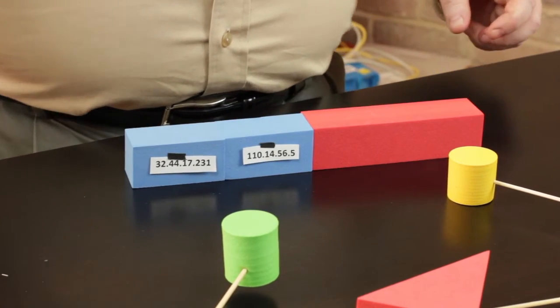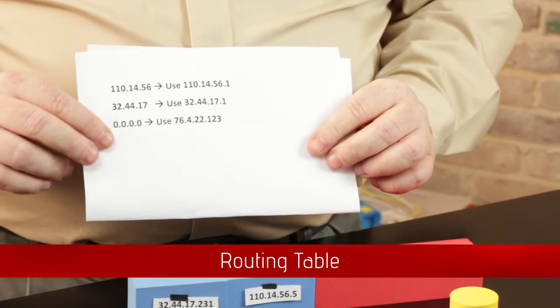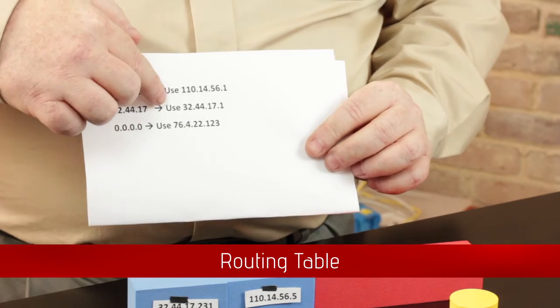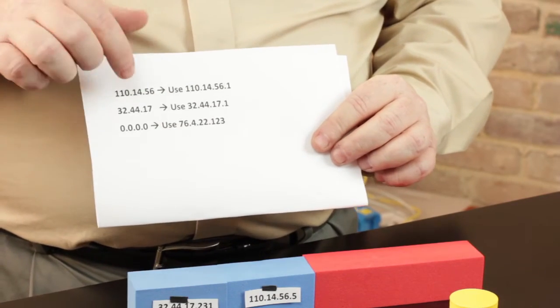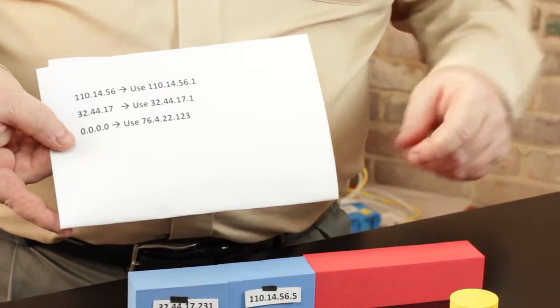Built into every router in the universe, there's something called a routing table. The routing table tells, based on whatever the network information is, where to send data. So in this case, because it's a very simple network, it knows basically just to send it out on the other side.